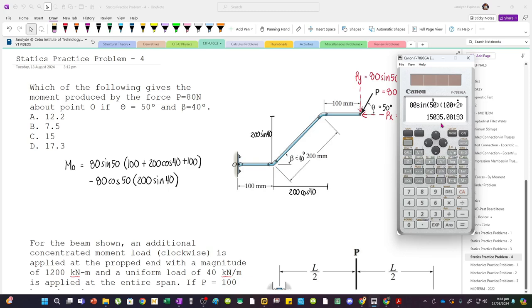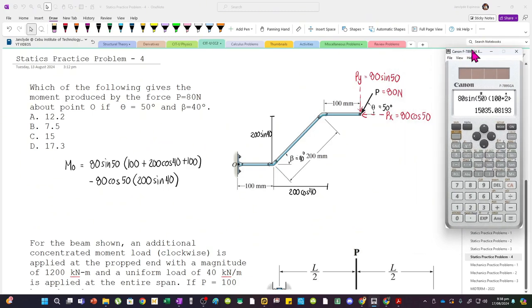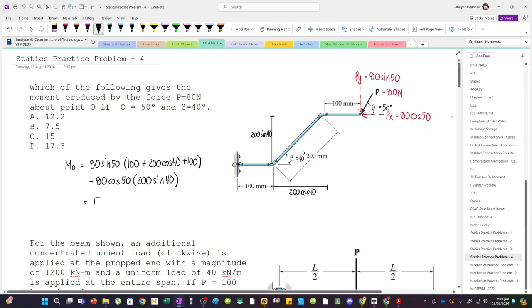The answer is 15035, and this is still in Newton-mm. So we have to divide this by 1000 because the choices are in Newton-meter. Divide by 1000, it becomes 15.035 Newton-meter.